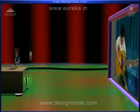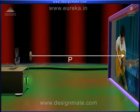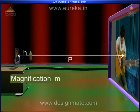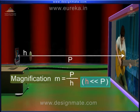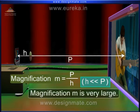The focusing lens is adjusted so that the screen lies at a distance P from the projection screen, and at a distance H from the slide holder. The magnification is given by M equals P over H. But as H is extremely small in comparison to P, the magnification M is very large.